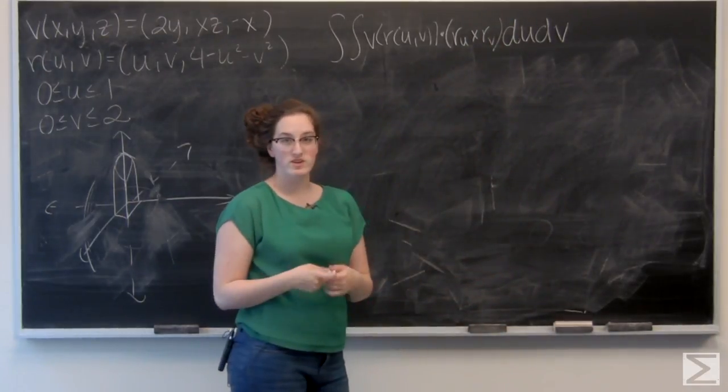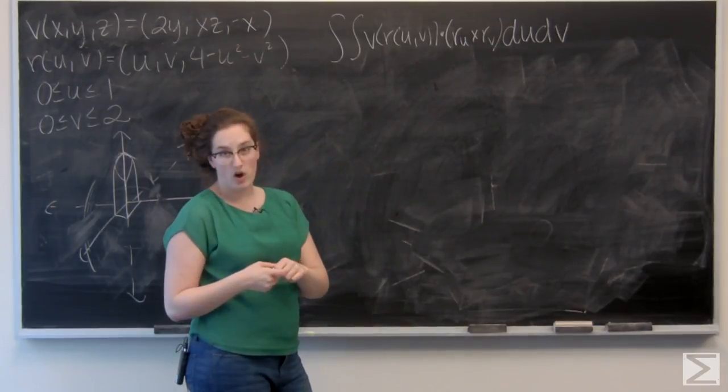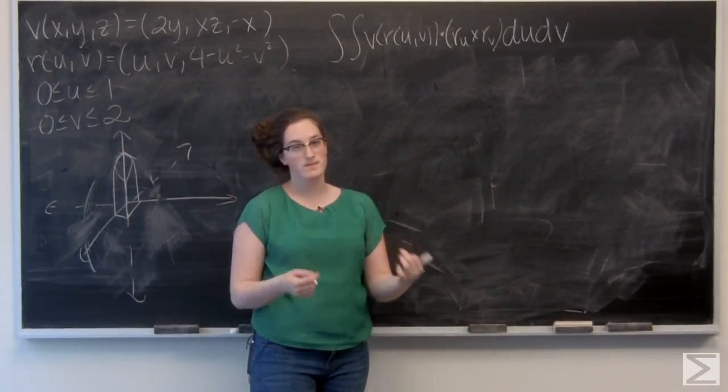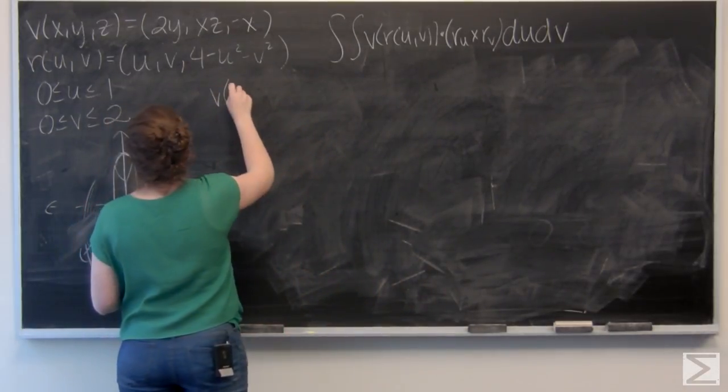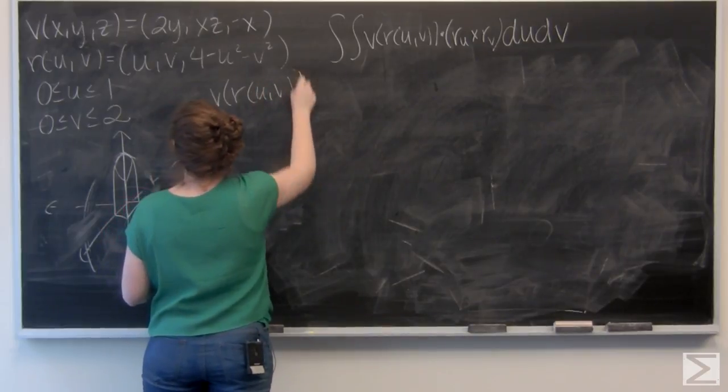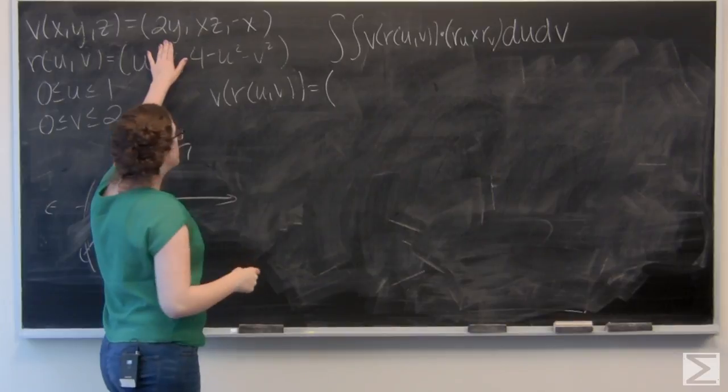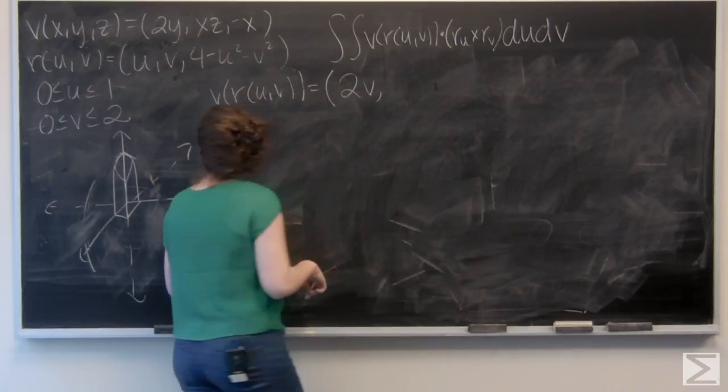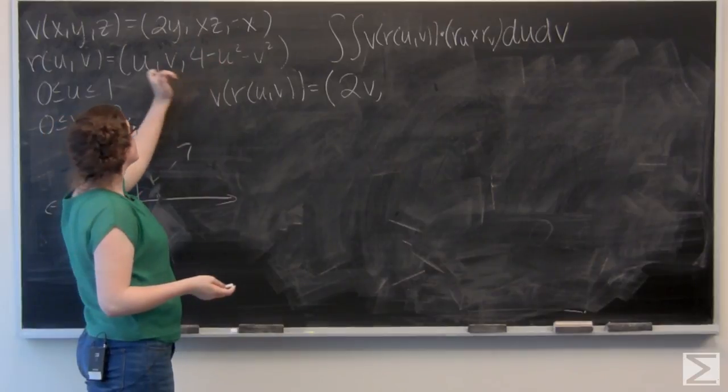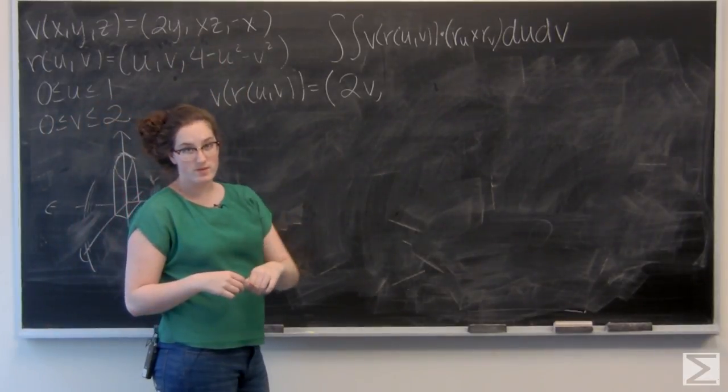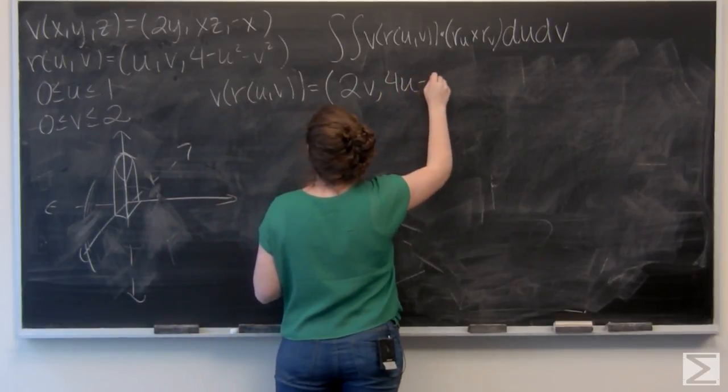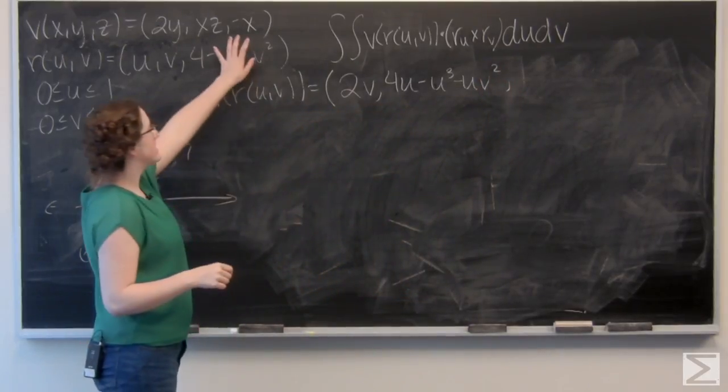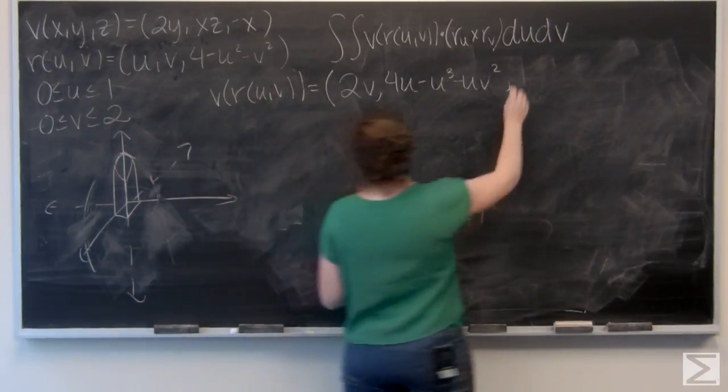So I have two components that I need to find before I can evaluate this integral. And let's look at the first one, v of r. So that means everywhere I see an x in v, plug in the i component of r. Everywhere I see a y, plug in the j component. z, plug in the k component. So, for the first component of v, I've got 2v, the variable, not the vector field. And then for the second component, I have xz, which is like u times 4 minus u squared minus v squared. I'm going to go ahead and multiply that out. So, and then for the third component, I've got negative x, which is just negative u.